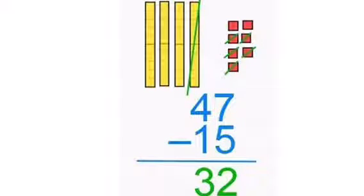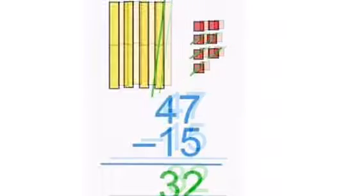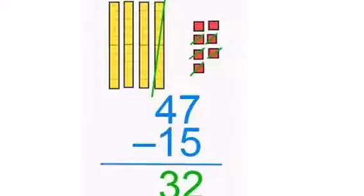We can easily take 5 away from 7, which gives us 2, and 1 away from 4, which gives us 3, which gives us the answer 32.